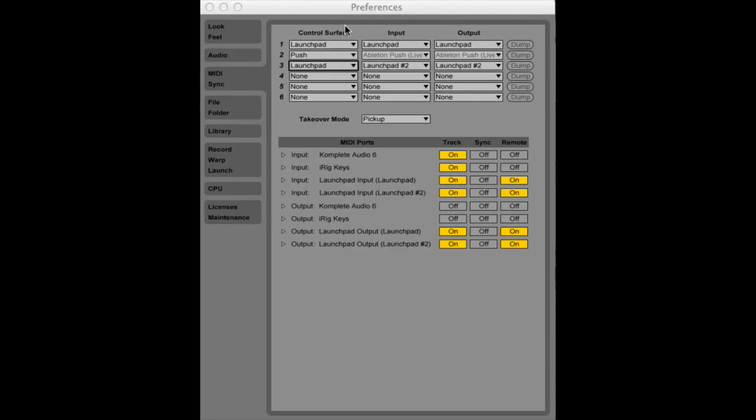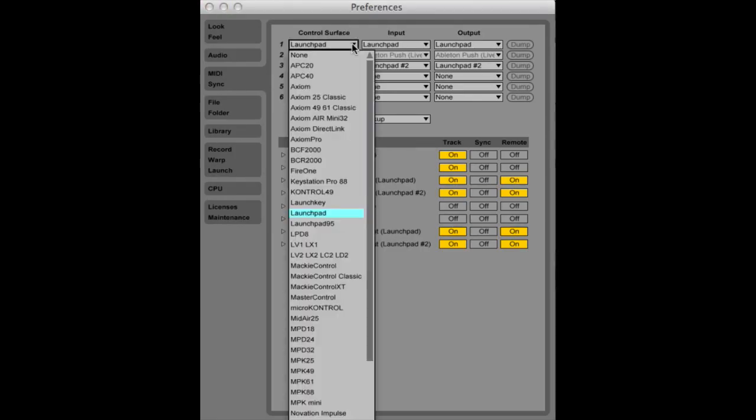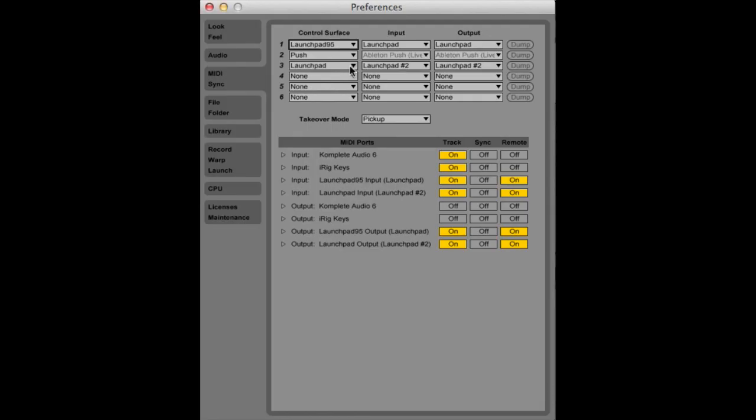Then you'll need to set up the ins and outs inside of Ableton. So go into your MIDI ins and outs and set your control surface as Launchpad 95 and set your input and output to Launchpad.